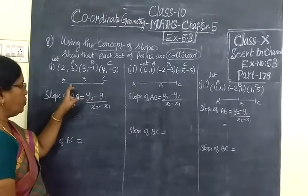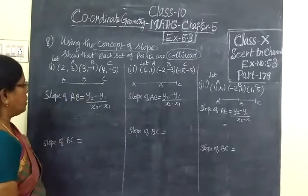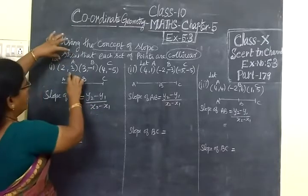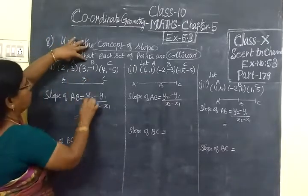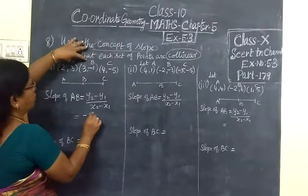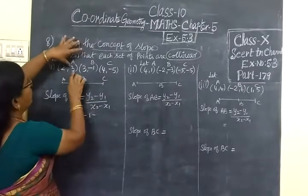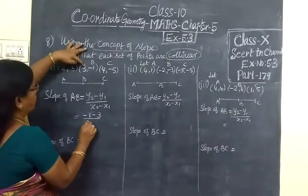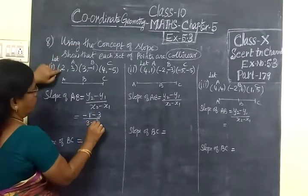Because B is common for both AB and BC. So Y2 minus Y1, you take A and B. Y2 is minus 1, minus Y1 which is 3. By X2, which is 3 minus X1, which is 2.